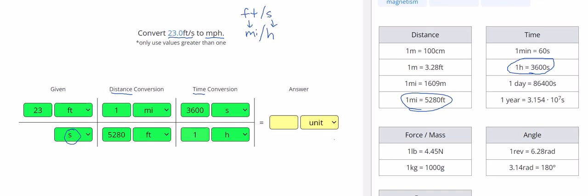Then we're going to multiply across the top and divide across the bottom, so I'm going to do 23 times 3,600 divided by 5,280, and that gives me 15.7 and the units will be miles per hour.